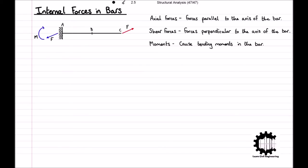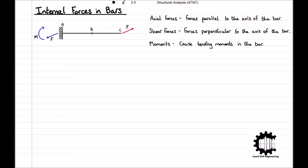When computing internal forces, in order to guarantee equilibrium, we must only consider the part of the structure to the left of the section, or the part to the right of the section. Looking at our simple structure for example, cutting the bar at point B, we can consider the structure to the left of the cut, or to the right of the cut. As we cannot consider the whole structure, we will focus on the left side.